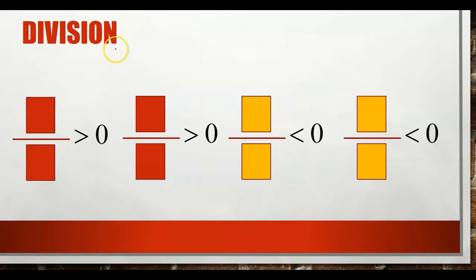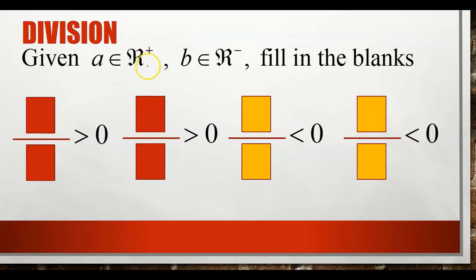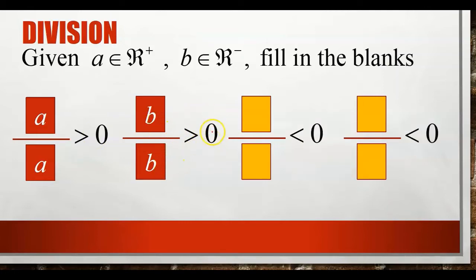Now we proceed to division. We have four statements. A over A — positive divided by positive is positive. B over B — negative divided by negative is also positive. A divided by B — positive divided by negative gives a negative number. And B divided by A — negative divided by positive also gives a number less than 0.